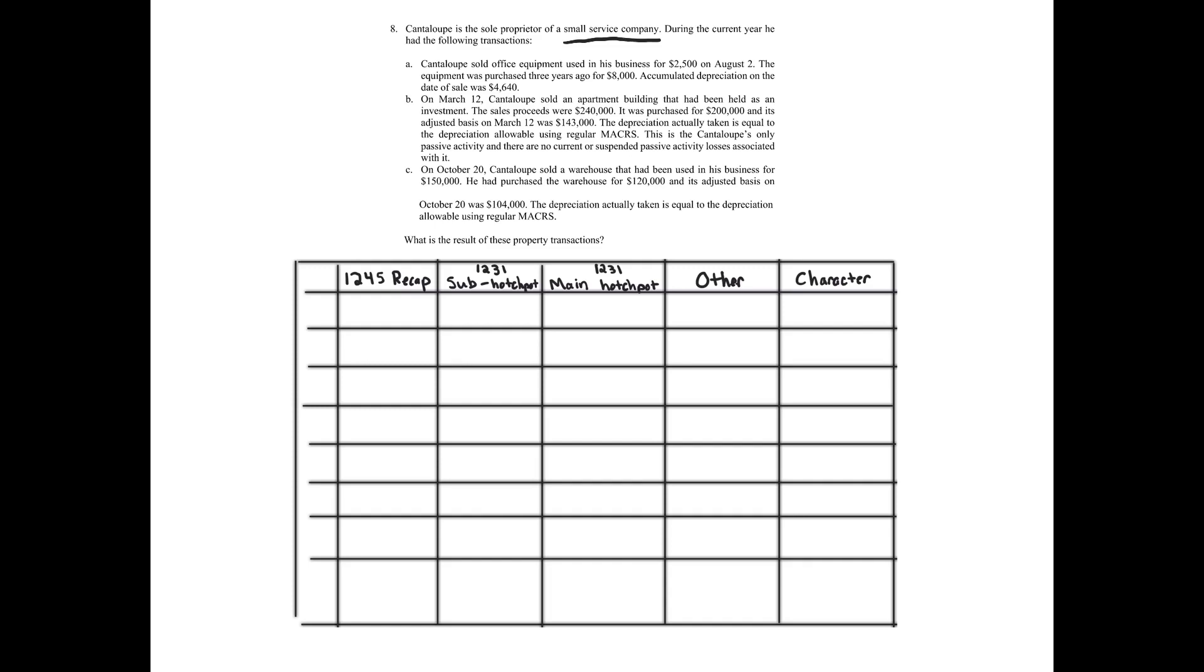There's A, B, and C. By the way, this is all part of C. Okay, so let's go through. Let's start off A. So in A, Cantaloupe sold office equipment using this business for $2,500 on August 2nd. Got a $2,500 amount realized. The equipment was purchased three years ago for $8,000. Accumulated depreciation on the date of sale was $4,640.